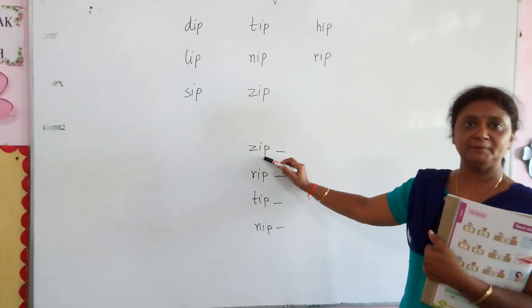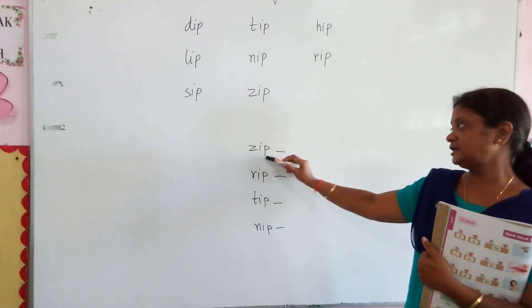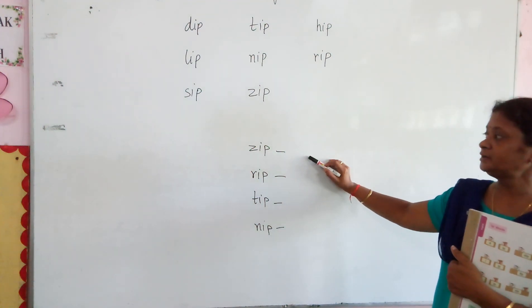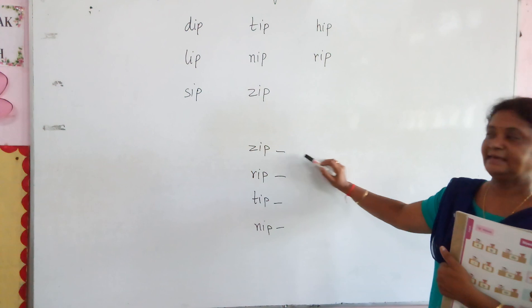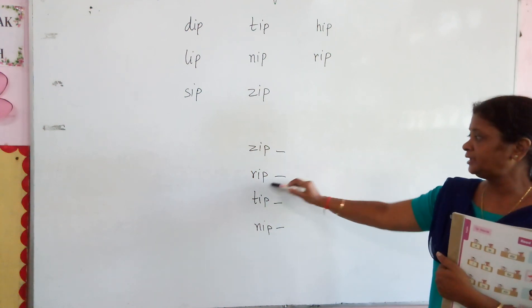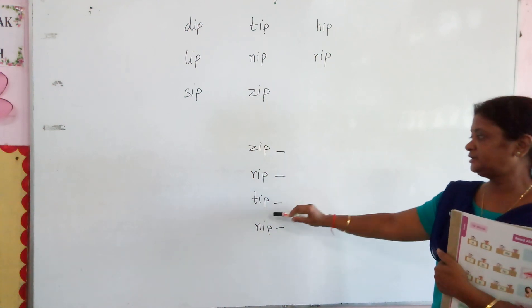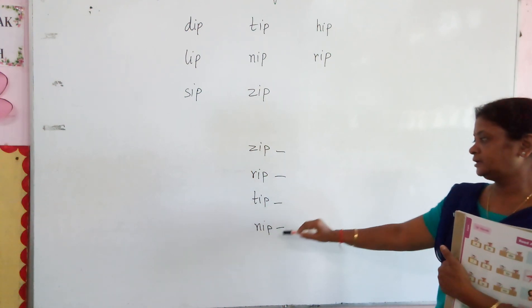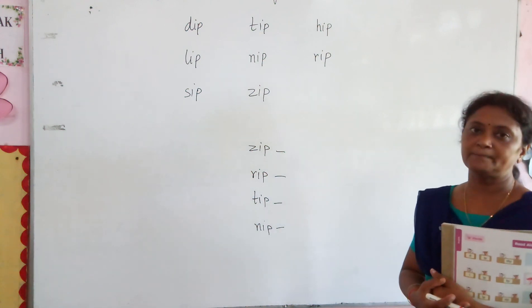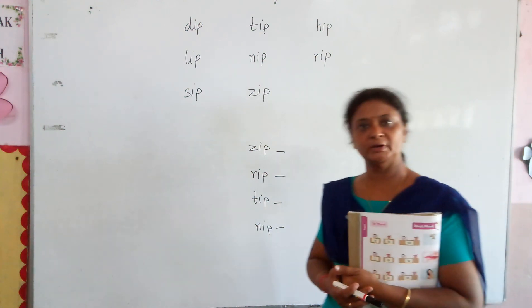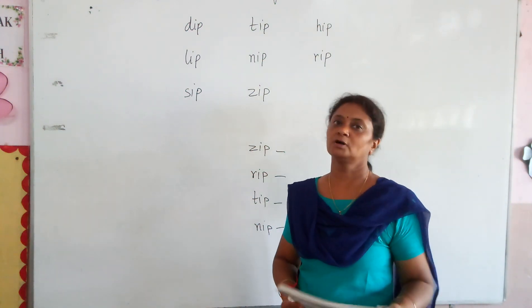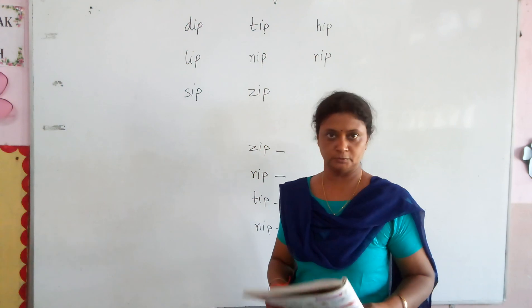You have to write the writing part: zip, rib, zip, tip, nip, hip. Any of these will be accepted. So this way you can complete the notebooks.